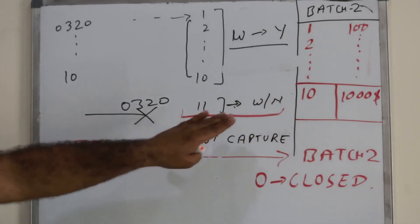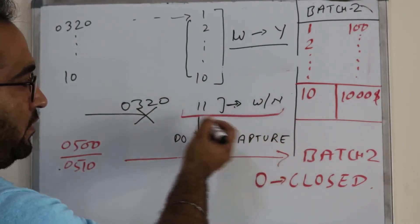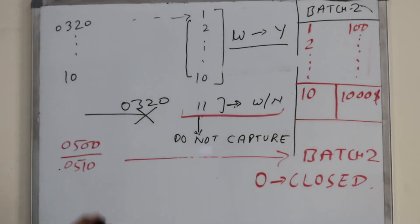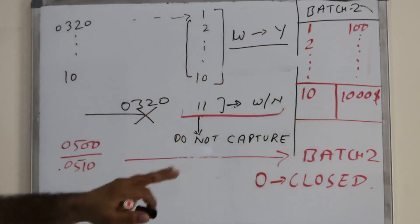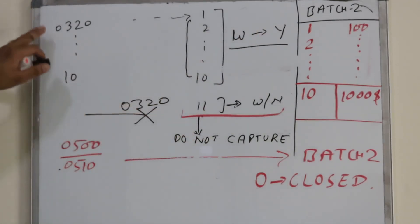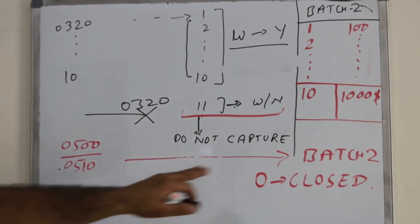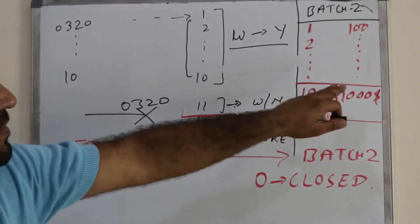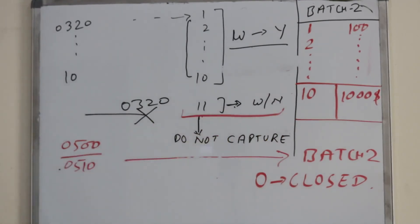It depends on the acquiring bank's application design, but this 11th transaction cannot be captured and cannot be used to settle the merchant. However, the 10 transactions can be used. Once all 320 messages have been submitted, the POS device sends the 500 message again. This time, batch 2 can be matched with the 500 message, the status of batch 2 is marked from open to closed, and batch 2 has been successfully reconciled with the merchant POS device.